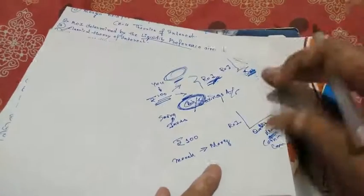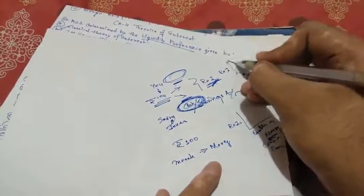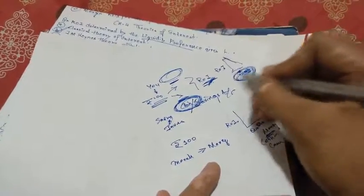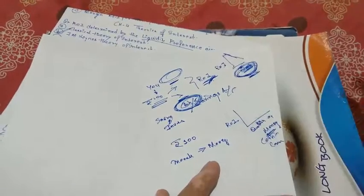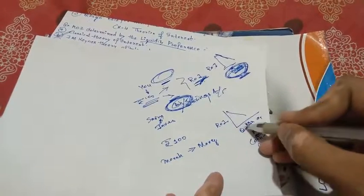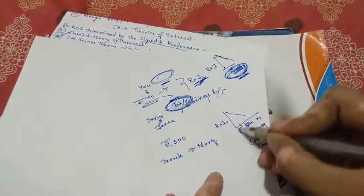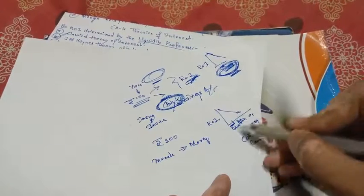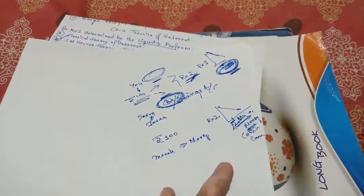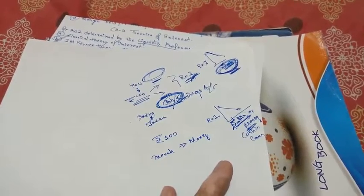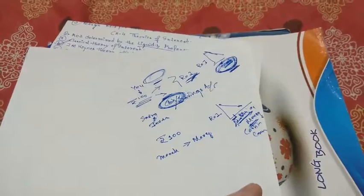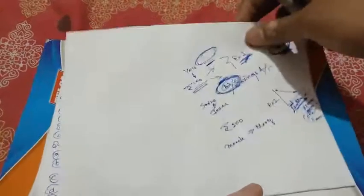Graphically: in the Classical theory, if the rate of interest is very high, the person invests more and saves less. In the Keynes graph, if the rate of interest is very high, the quantity of money the person holds is less; if the rate of interest is low, the cash in hand is high because the person doesn't want to invest at a low interest rate. Both concepts are essentially the same, with the key difference being real factors versus monetary factors.